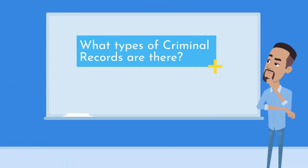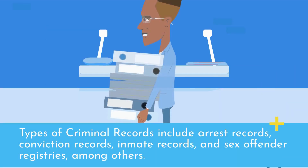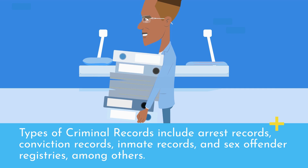What types of criminal records are there? Types of criminal records include arrest records, conviction records, inmate records, and sex offender registries, among others.